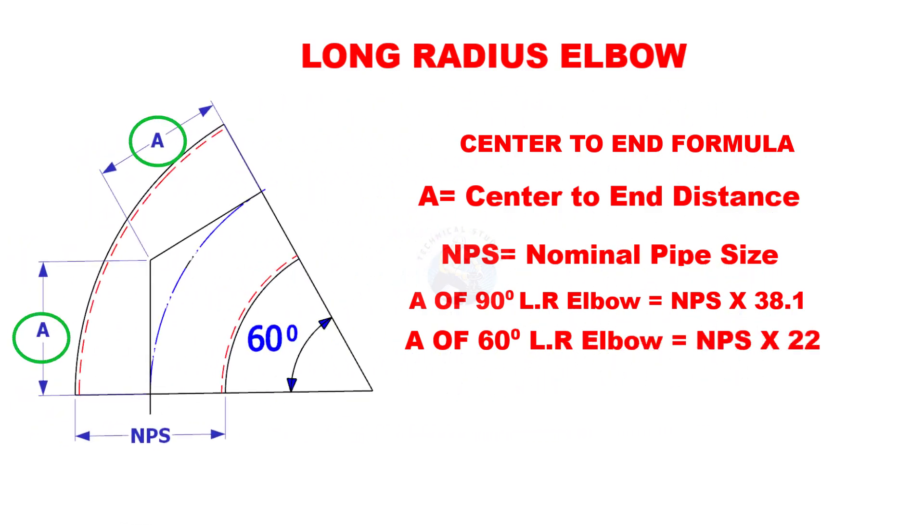A of 60 degree long radius elbow is nominal pipe size multiplied by 22.